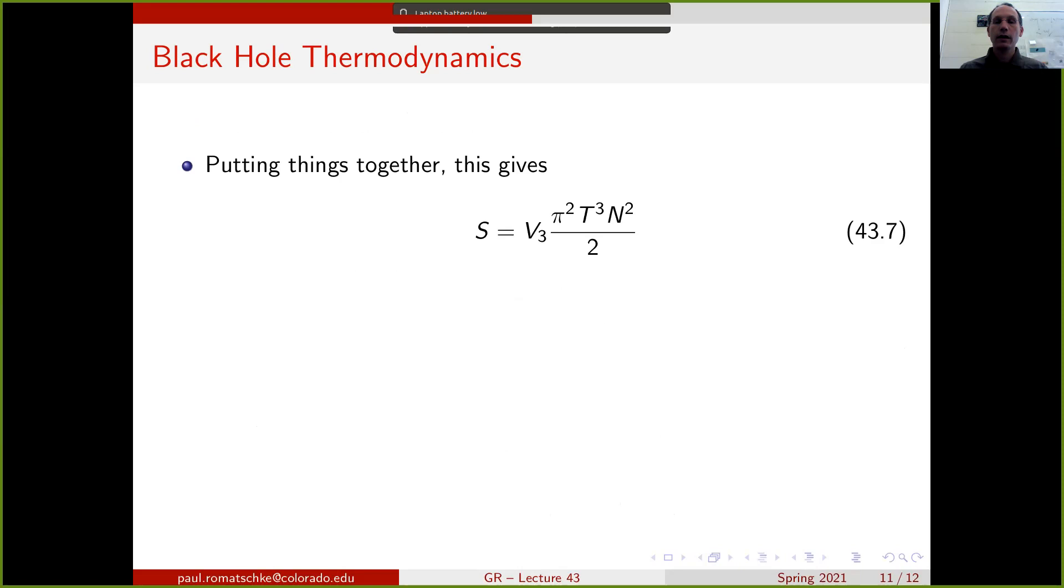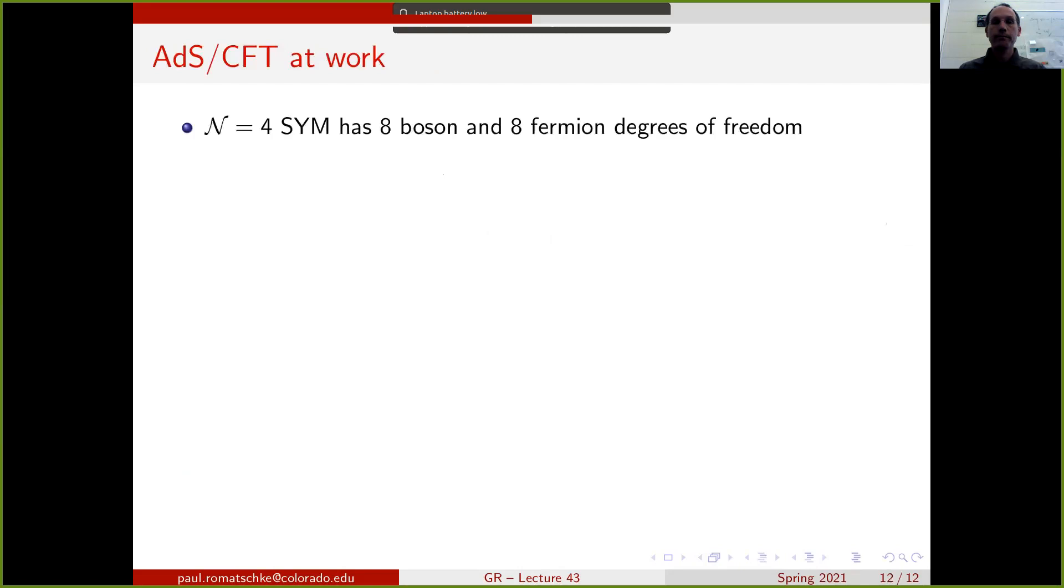Putting everything together, we get that the entropy of the black brane is given by the volume times a number of factors. Dividing by the volume gives us the entropy density little s, which is now π²T³N²/2. And this is supposed to be a property of the quantum field theory that we are describing using this duality.